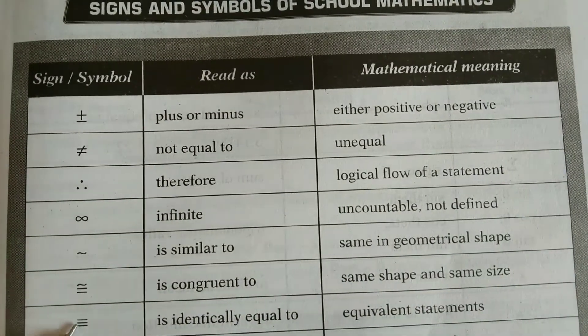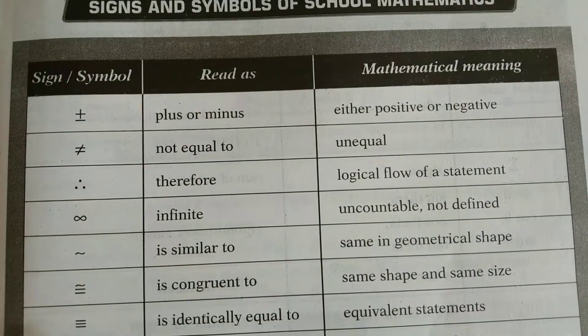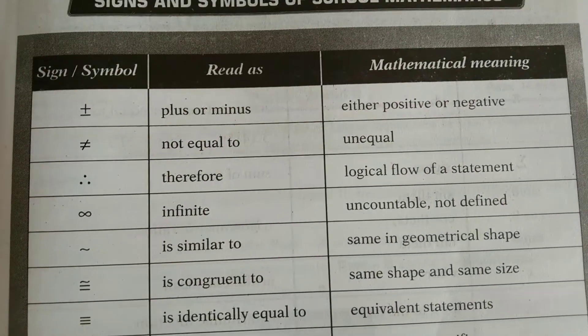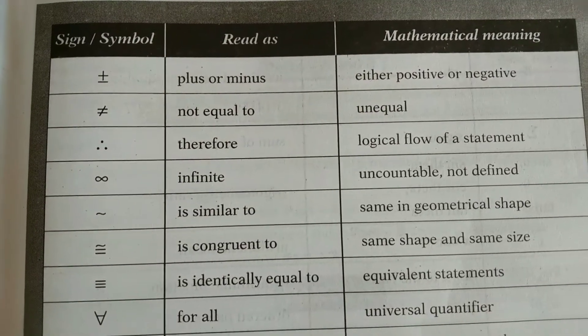Three dashes, I mean which is not equal, this is identically equal to. That is equivalent statements.